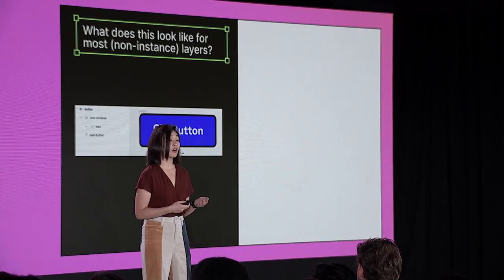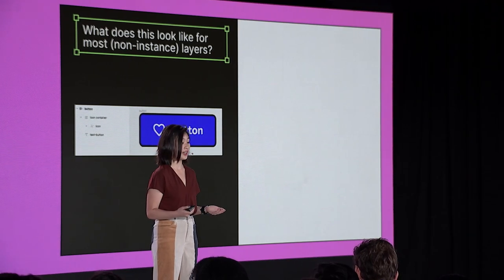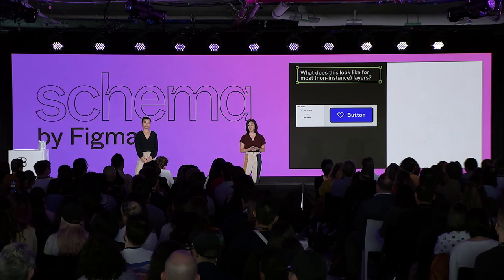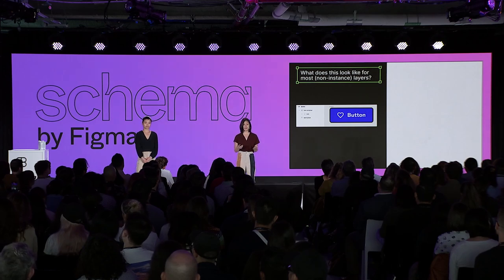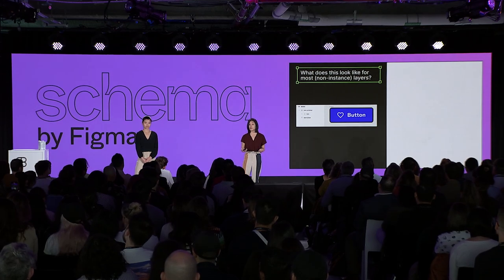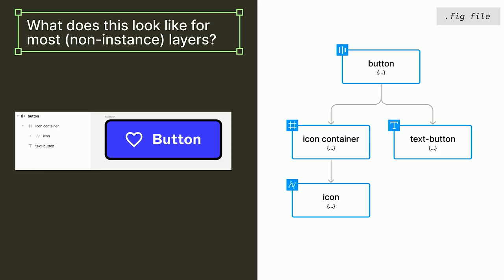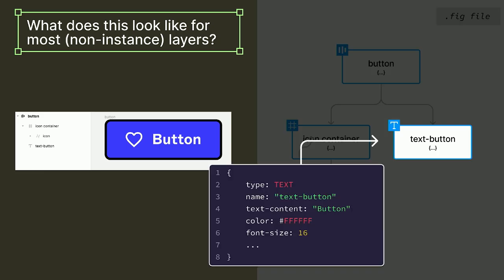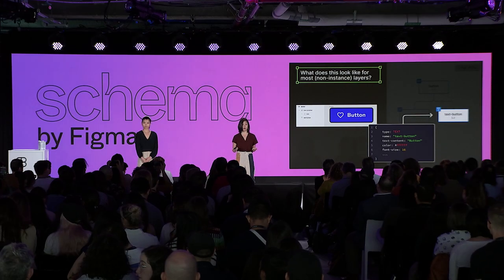So what does this look like for most layers that are not instances? Let's take an example with just frames — a basic button with frame, text, and vector layers. Here is a visual representation of what the .fig file looks like: each layer in your design maps exactly to one object in the file, and each object contains information such as its type, name, content, color, font size, etc.